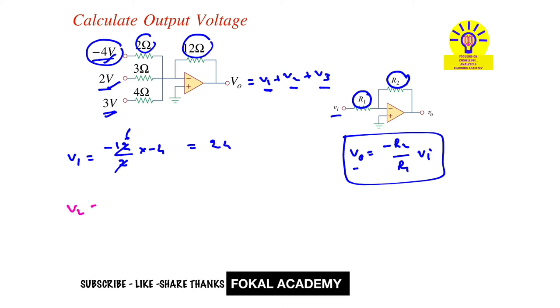V2 equal to minus 2 ohms by 3 ohms into 2 volts, so 2 times 2 is 4 divided by 3, so minus 4/3. And V3 equal to minus 2 ohms by 4 ohms into 3 volts, so that's minus 3/2.